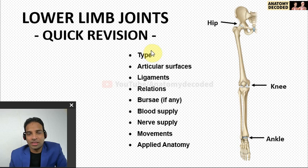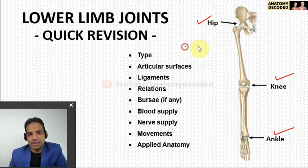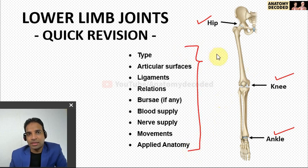Hello everyone, welcome to this session on joints of the lower limb. In this session we'll be revising all the joints of the lower limb. Here I have listed down the major joints: hip joint, knee joint, and ankle joint. These are the joints most frequently asked in examinations. We'll be covering these joints under all these headings, and for remaining joints I'll cover the types of the joints.